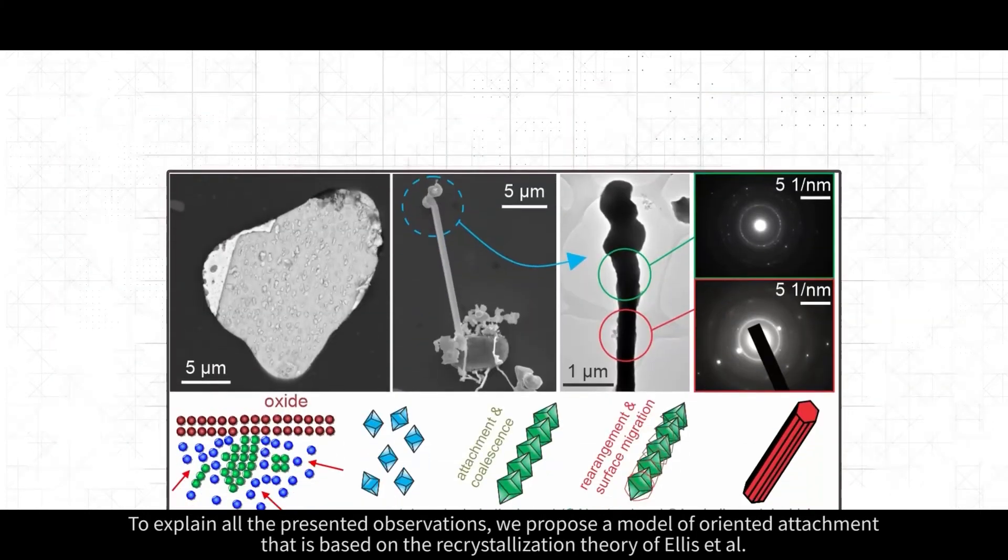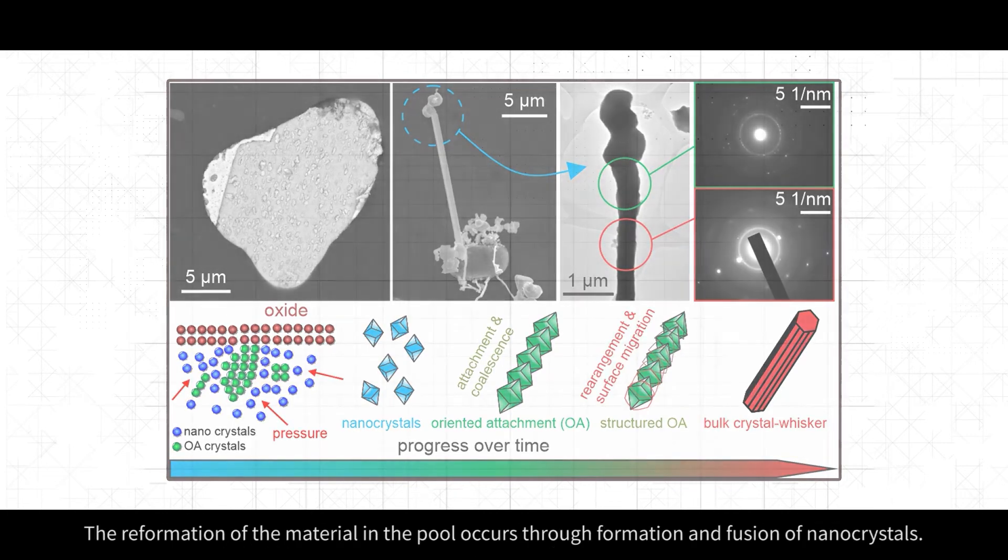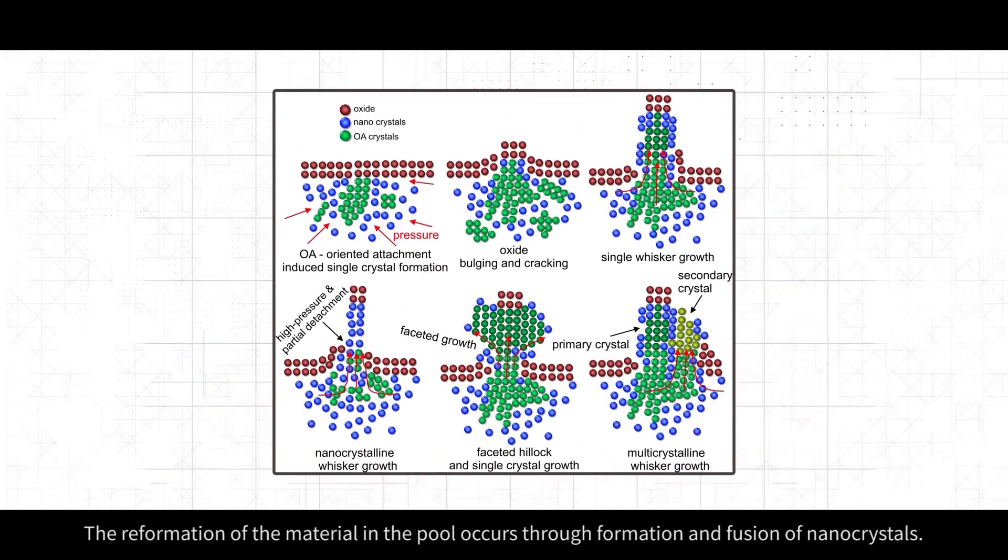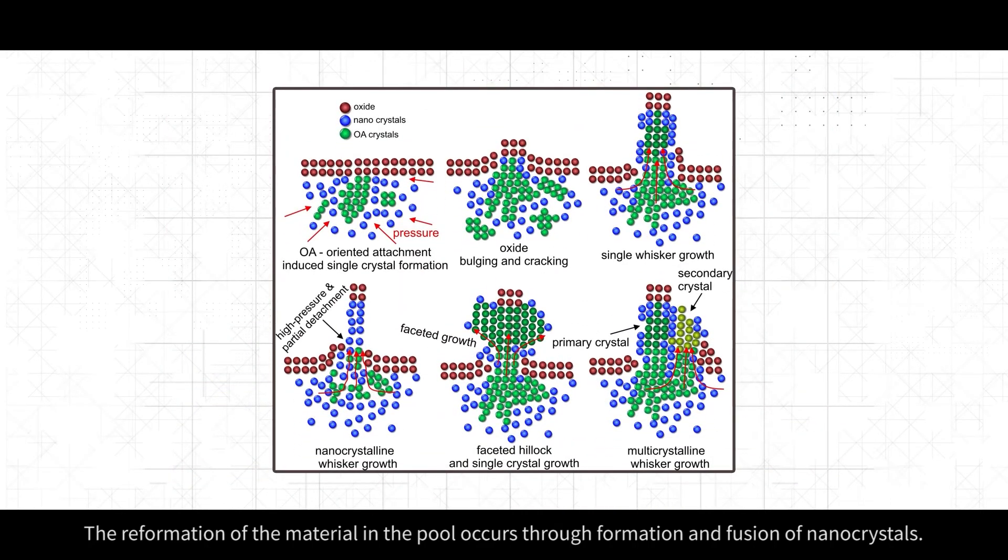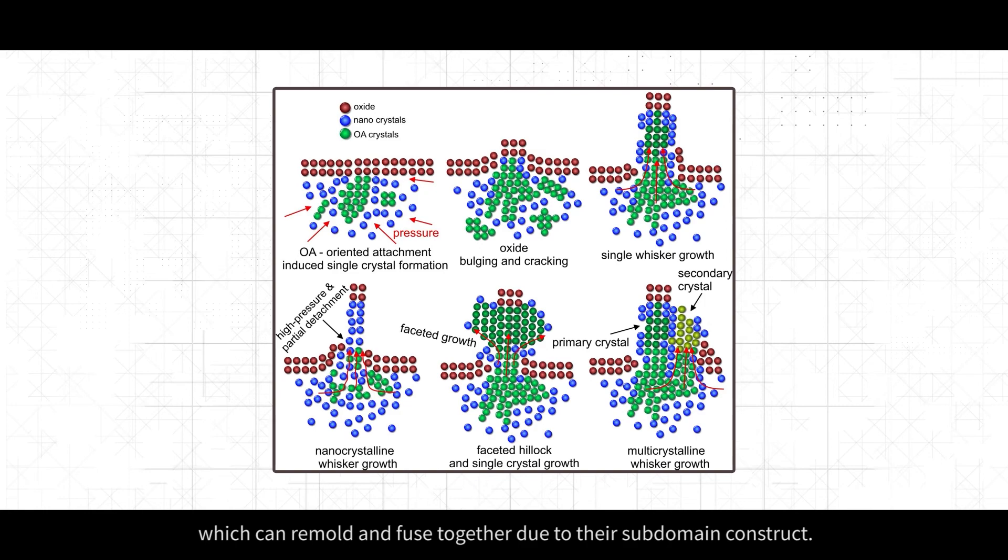To explain all the presented observations, we propose a model of oriented attachment that is based on the recrystallization theory of Ellis et al. The reformation of the material in the pool occurs through formation and fusion of nanocrystals. Due to the local differences in pressure, the nanocrystals orient and grow together in monocrystal structures, which can remold and fuse together due to their subdomain construct.